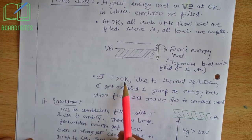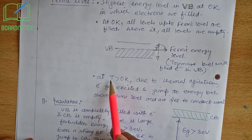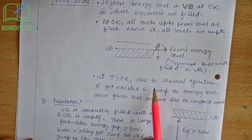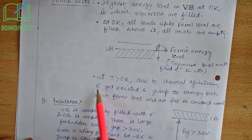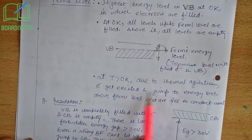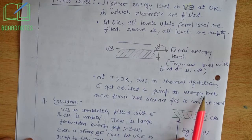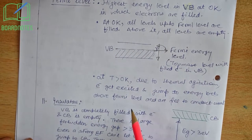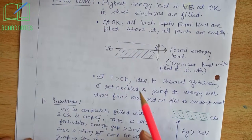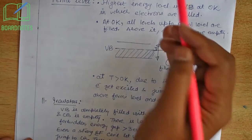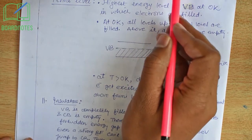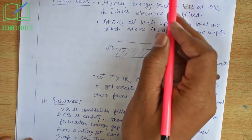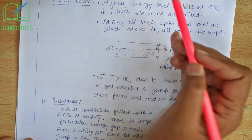When temperature is increased — at temperature greater than 0 Kelvin — due to thermal agitations, electrons may get excited and they jump to energy levels above the Fermi energy level. In case of metals, the Fermi energy level is already in the conduction band, so electrons are freely available to move and conduct electricity.